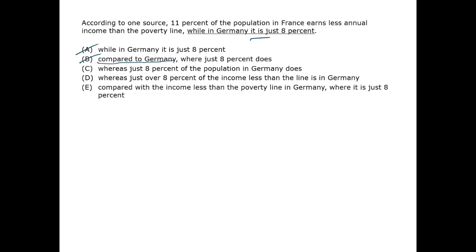C might be correct. D conveys a strange meaning — it's not talking about the percentage in Germany in poverty, but rather the percentage of the poor in Germany. Therefore D is out. E is a mishmash of previously identified problems. The correct answer is C.